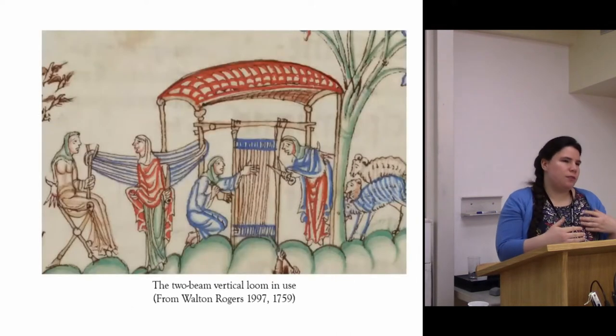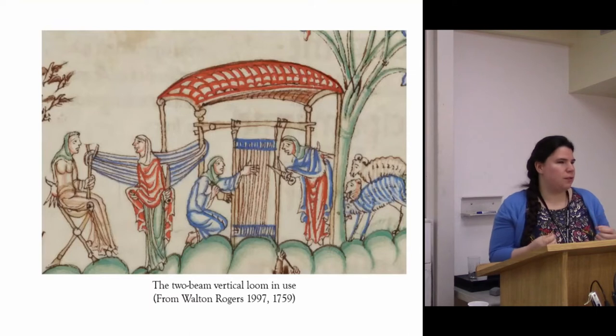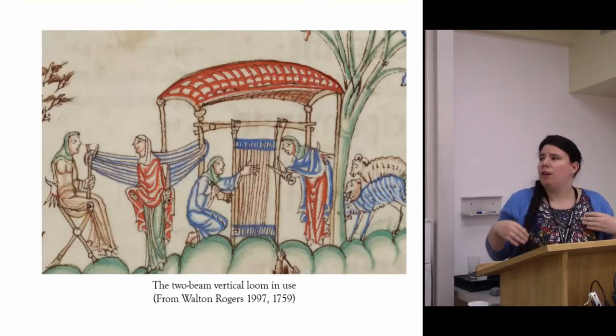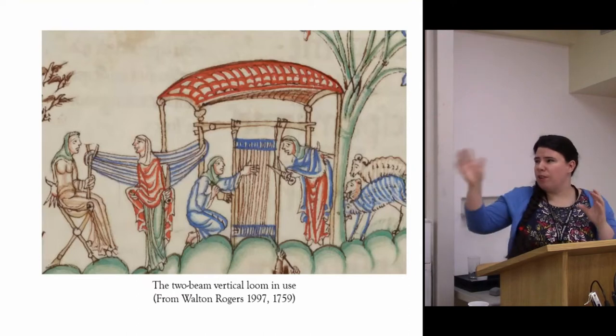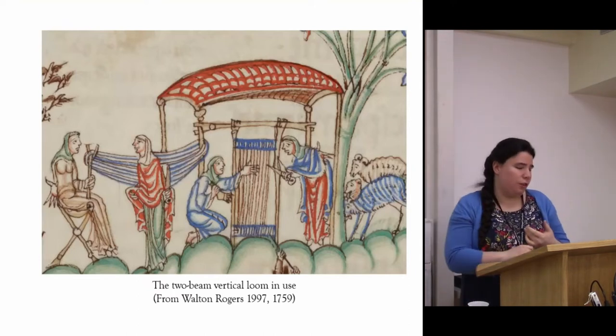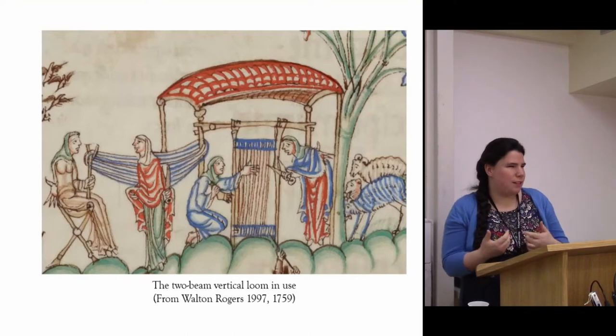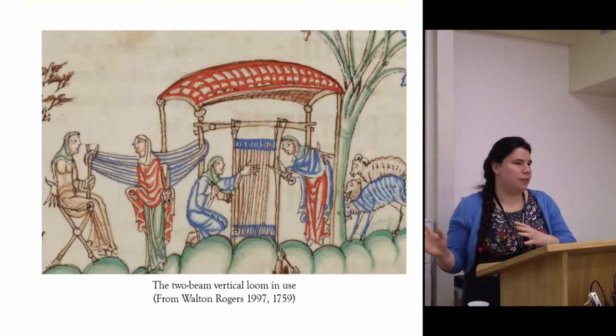As you get increased urbanization of settlements you start to see shifts in how textile production is organized. There is a brief introduction of a new type of loom, this is the two-beam vertical loom. This loom didn't necessarily have an impact on production time, so it wasn't incorporated into this experiment.